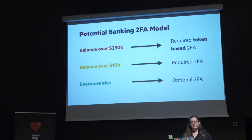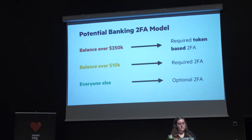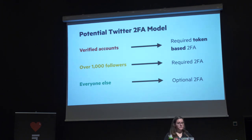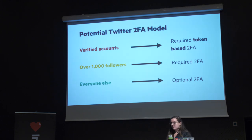You can apply this to other industries too. In banking, you could require token-based 2FA for accounts with assets over a quarter million dollars. For something like Twitter, verified accounts or accounts over a certain follower count could be required to have token-based 2FA, while it stays optional for everyone else — you don't want the barrier to entry too high when someone creates an account. Some services like Coinbase do require heavy multi-factor authentication even at account creation, because the risk is so high — if somebody immediately buys five Bitcoin, they're immediately a target.